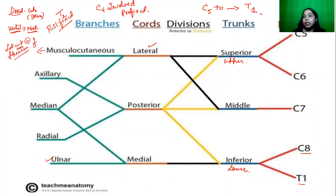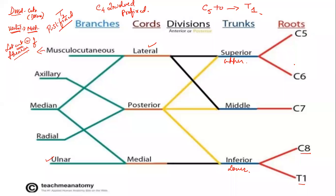So, this is how the brachial plexus is set up — roots, then trunks, then divisions, cords, and branches. You should always remember that whenever a question comes, it is always about the branches from the different cords they'll ask.